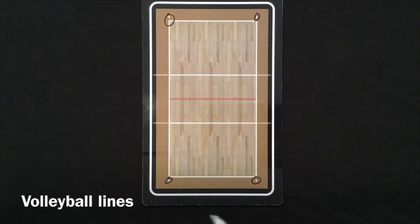When the server serves, the server needs to stand in between these two lines and these dashes help the referees see if that's taking place or not. If you serve from outside of those lines it's a fault and a point for the other team.